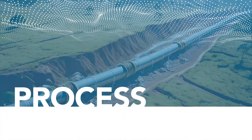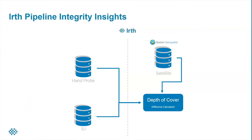From a process standpoint, it's actually very simple. As a customer, you have hand probe data or ILI data — you provide that to Earth Solutions. That data can come in many formats; most commonly a spreadsheet or CSV file, though we can also import via shapefiles and APIs. Once that data is in Utilisphere, we have the specific lat-longs of your previous depth of cover findings.